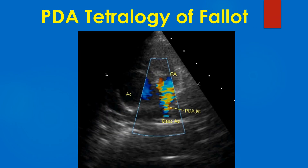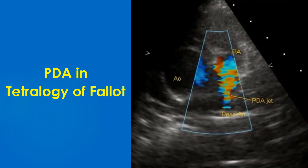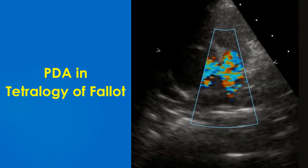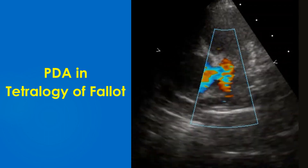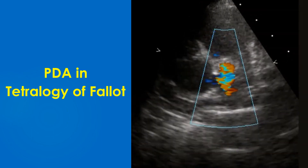Echocardiogram showing PDA in a case of tetralogy of Fallot on color Doppler imaging. This PDA is a compensatory mechanism to improve pulmonary flow in tetralogy of Fallot. Color Doppler echo shows a high-velocity multicolored jet into the pulmonary artery from the descending aorta, suggesting a PDA.